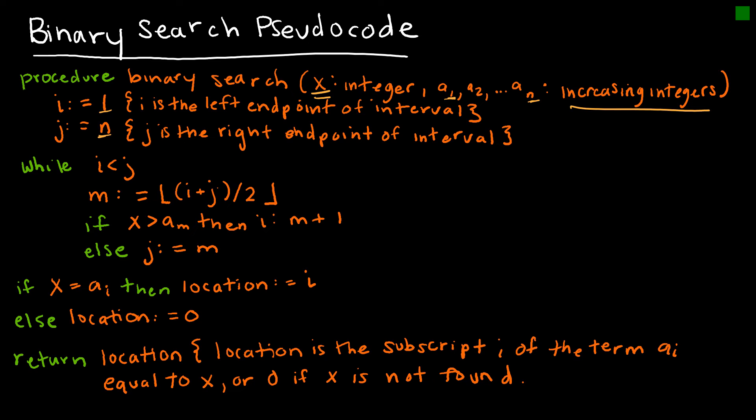Then we're saying, while i is less than j, so while essentially we don't have a list of 1, we're going to take the floor function of i plus j divided by 2. So we didn't have to end up doing the floor function in our last example, just because that's the way it worked out. But if we had to, we would have done the floor function, rounded down to the nearest integer. We're basically taking the subscripts, or the locations, of the left and right endpoint and dividing by 2. Then we're saying, if x, our desired value, is greater than that middle value, then my new left endpoint is 1 to the right of that, which is what we did. Otherwise, j, which is the left endpoint, is going to be that middle value that we used before.